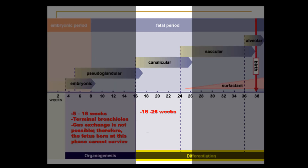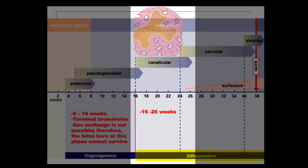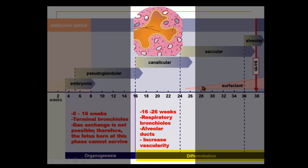The canalicular phase extends from the sixteenth week to the twenty-sixth week of development. In this stage, the respiratory bronchioles are formed along with the alveolar ducts. The terminal bronchioles get enlarged, and there is the beginning of formation of respiratory bronchioles and alveolar ducts. Also notable in this stage is the increase in vascularity, with vessels coming into close contact with the alveolar ducts. Gas exchange becomes possible at this stage, so if the baby is born during this period, survival is possible with proper care.